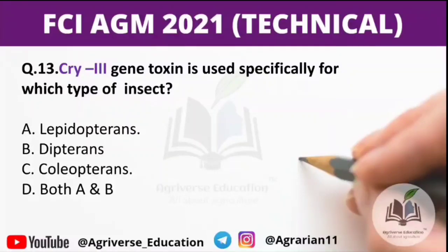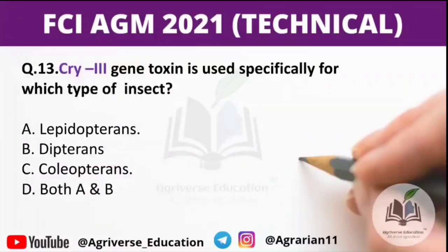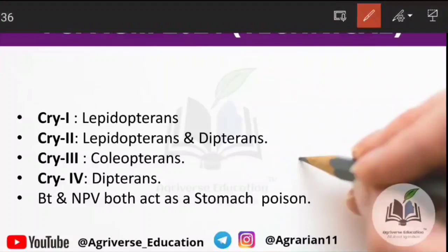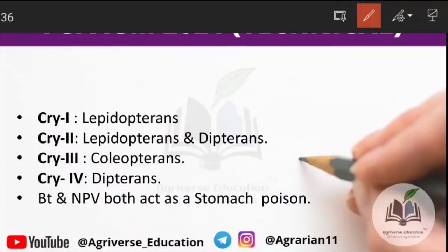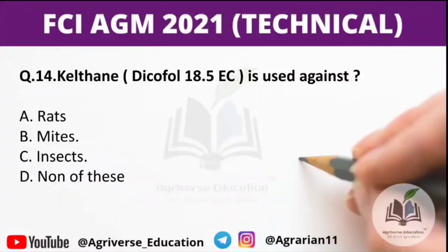Question 13: Cry3 gene toxin is used specifically for which type of insect? The right answer is option C — coleopterans, such as beetles. To summarize cry gene targets: Cry1 is used against lepidopterans; Cry2 against lepidopterans and dipterans; Cry3 against coleopterans; Cry4 against dipterans. Note: both BT and NPV act as stomach poisons. You must remember which cry gene targets which insect order.